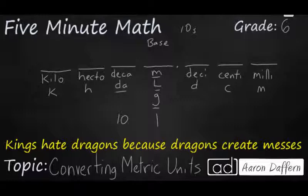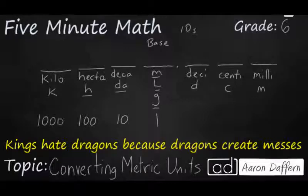Moving over, we have hecto — abbreviated H — which is the hundreds place. And then most of you are familiar with kilo, whether it be a kilogram, kiloliter, or kilometer. Kilo means a thousand. So we have prefixes for 10, 100, and 1,000: DECA, hecto, and kilo.